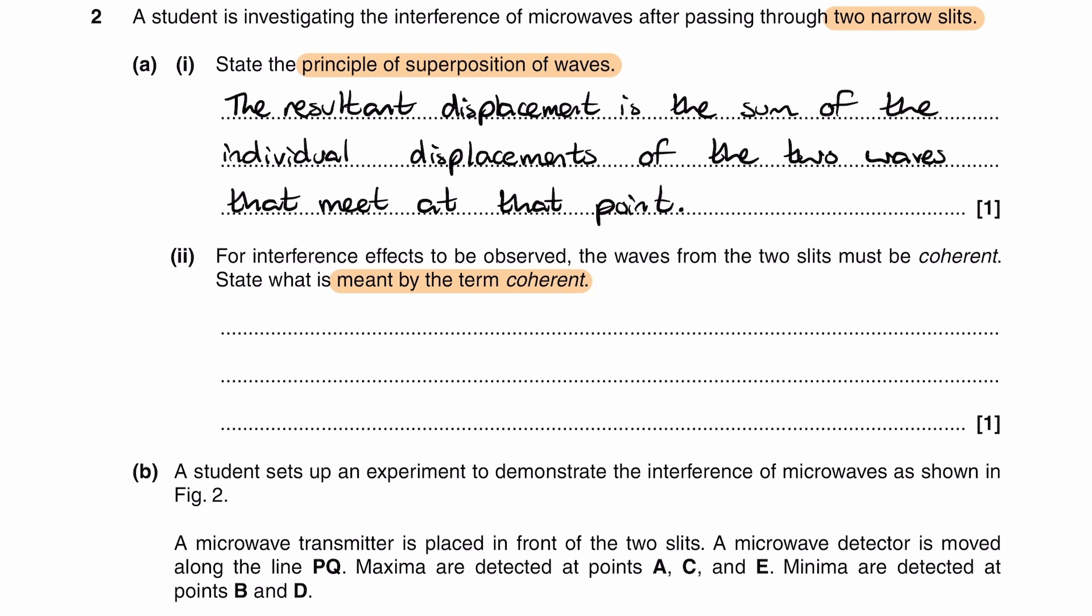For that to be the case, the frequency must be the same as well. But the thing that gets you the marks is saying that the phase difference between the two waves is constant. Now bear in mind, this is not the same thing as saying the two waves are in phase or in antiphase specifically. They can be that, because if you have two waves being in phase or being in antiphase, there is a constant phase difference or there can be a constant phase difference. The phase difference can be anything. So the two waves could be in phase or antiphase or out of phase. It just has to remain constant over time.